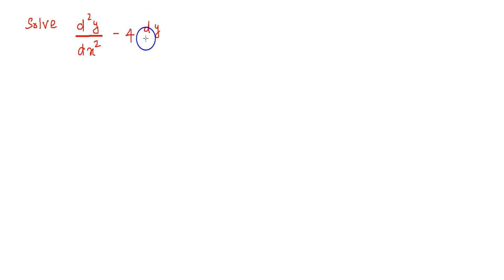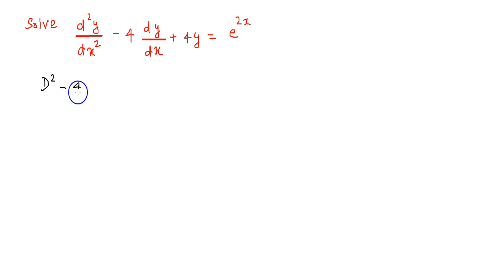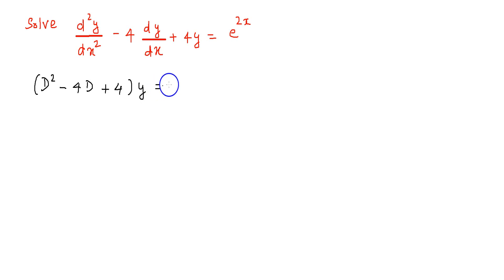Hello friends. In this series, we learn about solving differential equations with constant coefficients. Here we have d²y/dx² minus 4·dy/dx plus 4y is equal to e raised to 2x. Here onwards, we are going to use D² for d²/dx², D for d/dx, and so on. Let us rewrite the differential equation as (D² - 4D + 4)y = e^(2x).